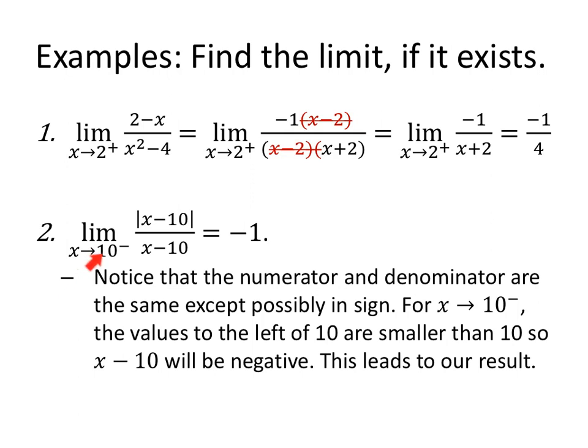As X approaches 10 from the left of the absolute value of X minus 10 over X minus 10. Now notice that the numerator and denominator are exactly the same, except the numerator will never be negative. The denominator might be. As X approaches 10 from the left, so values left of 10 are smaller than 10, so something like 9. 9 minus 10 is a negative 1, but an absolute value that will become a positive 1 in the numerator. 9 minus 10 is a negative 1 in the denominator. Positive 1 over negative 1 gives us a negative 1.